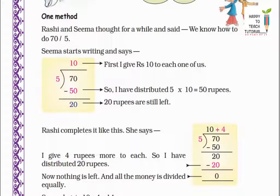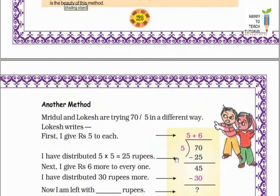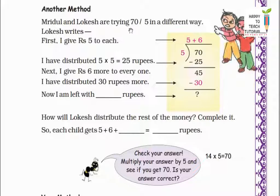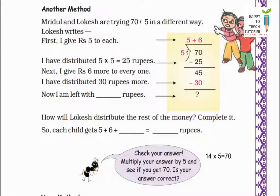Isi tarah Rashi and Sima ne 70 rupees sab mein barabar baant diye. Next we see another method. Mridul and Locis are trying 70 divided by 5 in a different way. Locis writes: first I give rupees 5 to each. So 5 into 5 is 25. Ab 70 rupees mein se 25 rupees distribute ho gaye. 70 minus 25 leaves 45 rupees still left to distribute among 5 children.